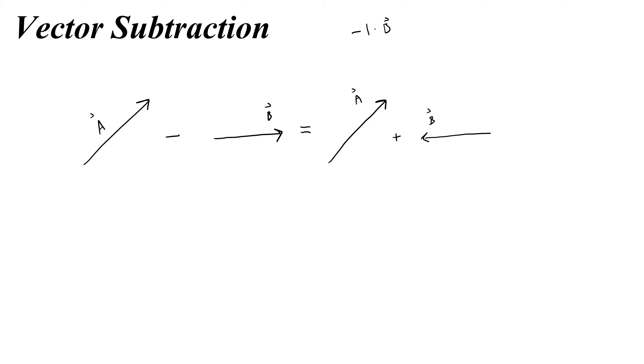So now I can add these, which would give me, here's a, and then b, instead of going to the right, goes to the left. And I would find the resultant sum by starting from the tail of a and drawing to the head of b. This would be my vector a minus b, or a plus negative b.